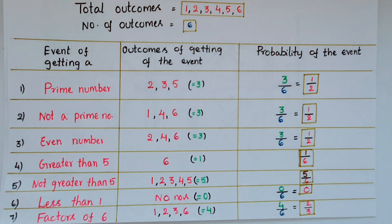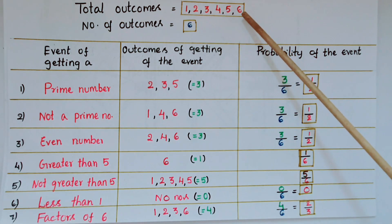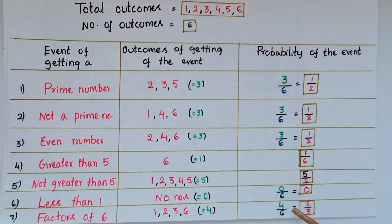Next one is factors of 6. So here factors of 6 are 1, 2, 3, and 6. So total outcomes here are 4. So probability of the event is equal to 4 by 6, that is 2 by 3.